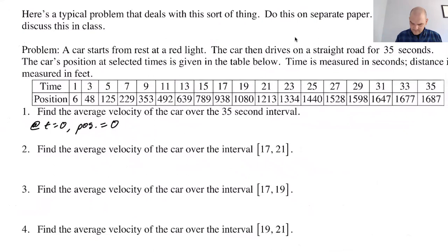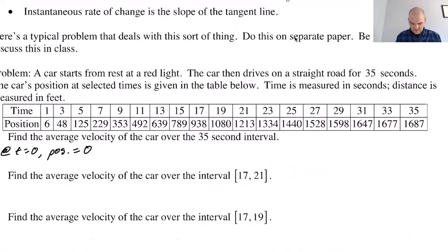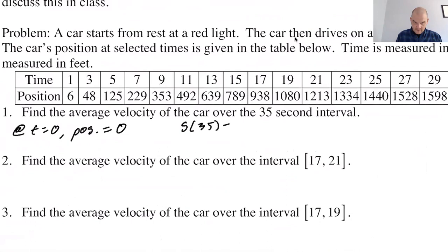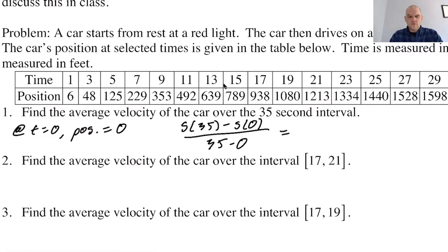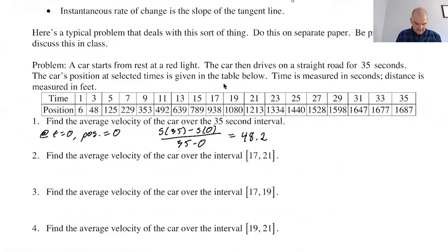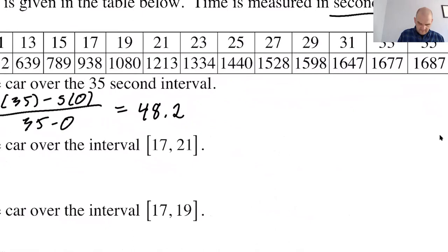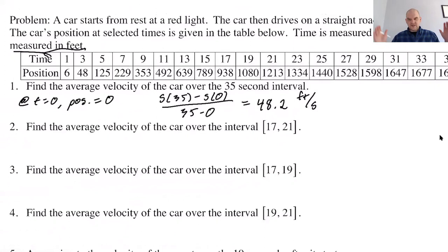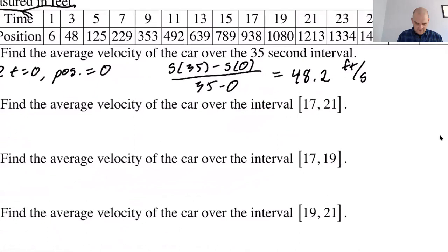Calling position s(t), the average velocity is s(35) minus s(0) over 35 minus 0. Using a calculator: that's 1687 minus 0 divided by 35, which gives 48.2. Position is measured in feet and time in seconds, so the answer is 48.2 feet per second. Now let's tighten up the interval and look at average velocity from 17 to 21 seconds.